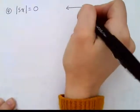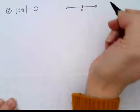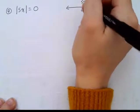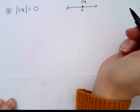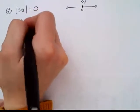The only value on the number line that's zero units away from zero is zero itself. So 5x has to be here. Well that means I only have one equation to set up. 5x equals zero.